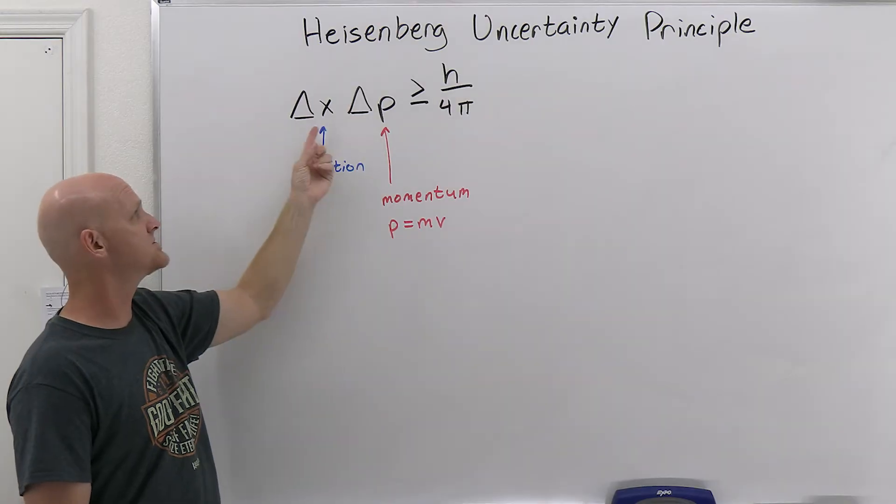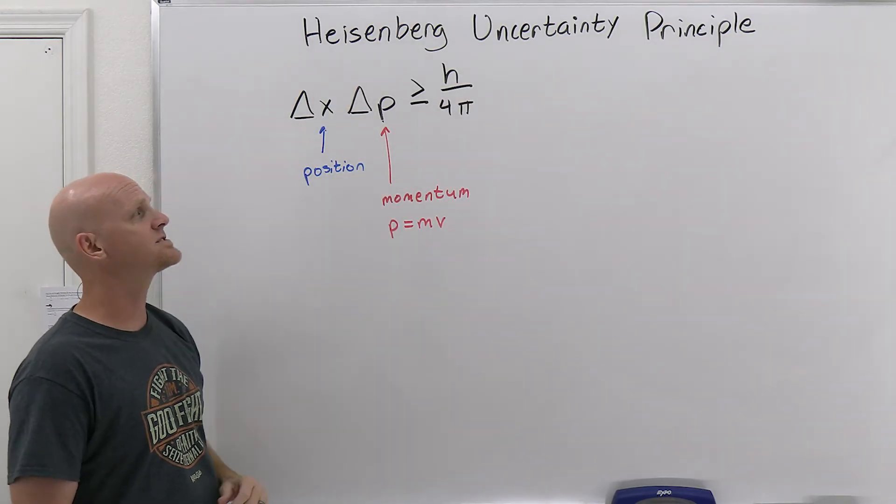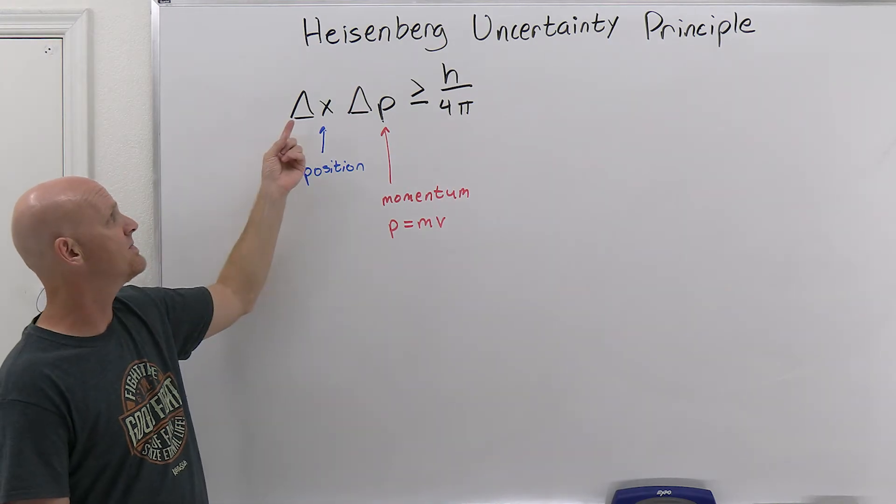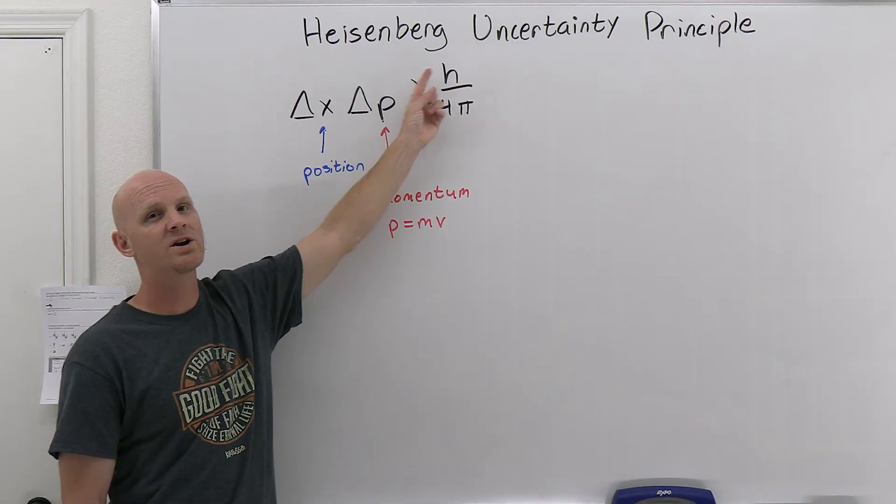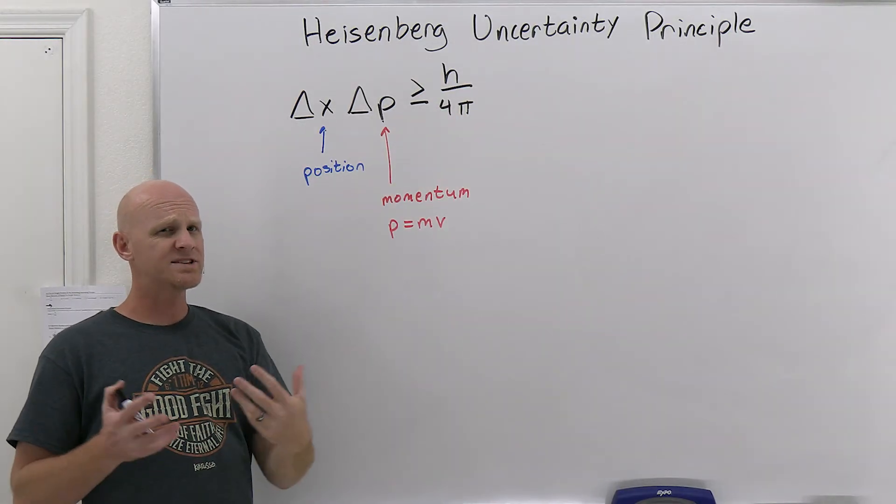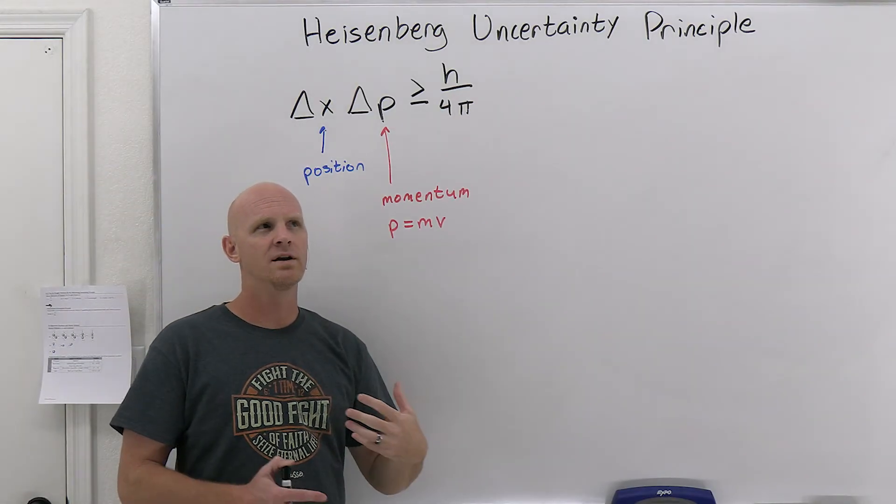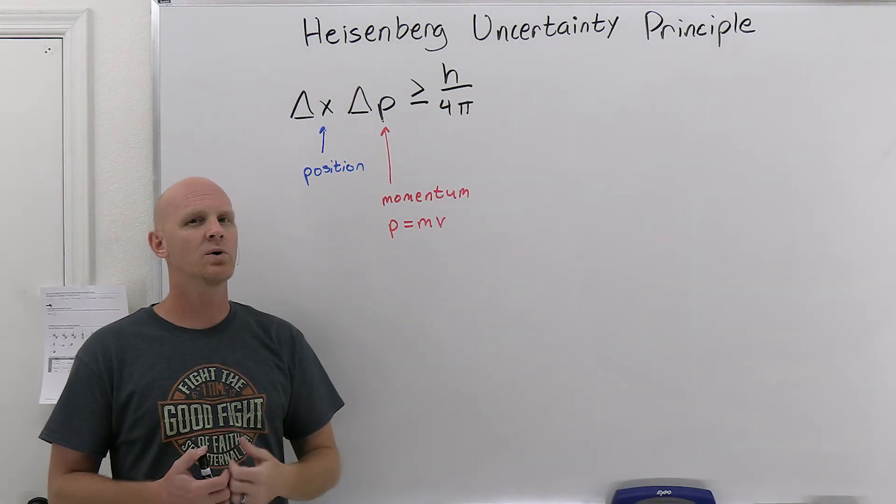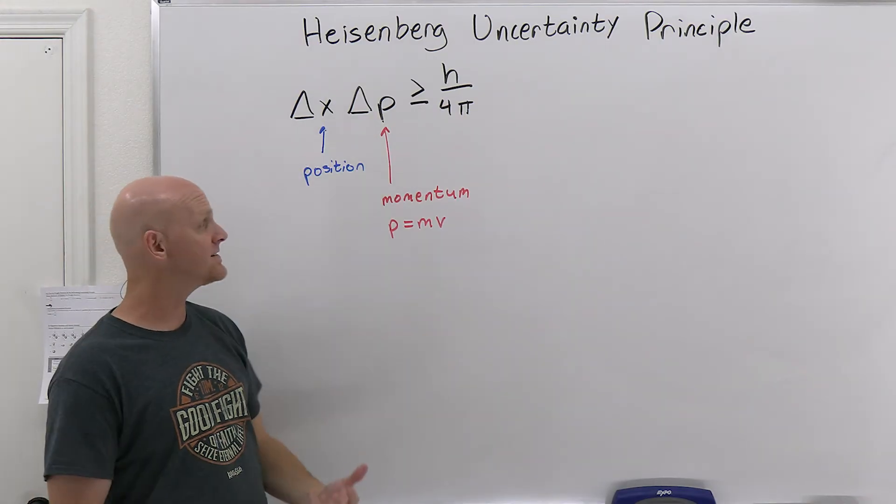But our uncertainty principle here, big thing you got to know, is the two parts to this. And this can be expressed in a couple other ways, but this is the one you're most likely going to be tasked with in a general chemistry class. But the uncertainty in the position times the uncertainty in the momentum is greater than or equal to a constant. And so you should understand what this kind of means. And so, you know, the idea is that, you know, we're going to not be able to simultaneously know both the location, the position of an electron, and its momentum.